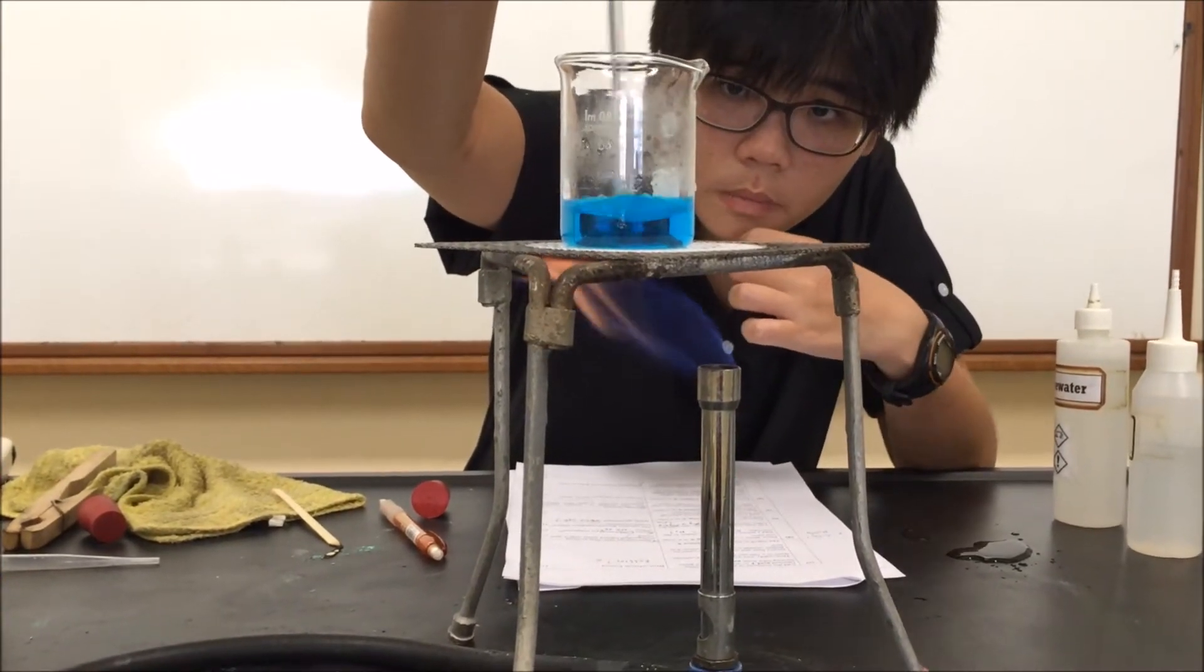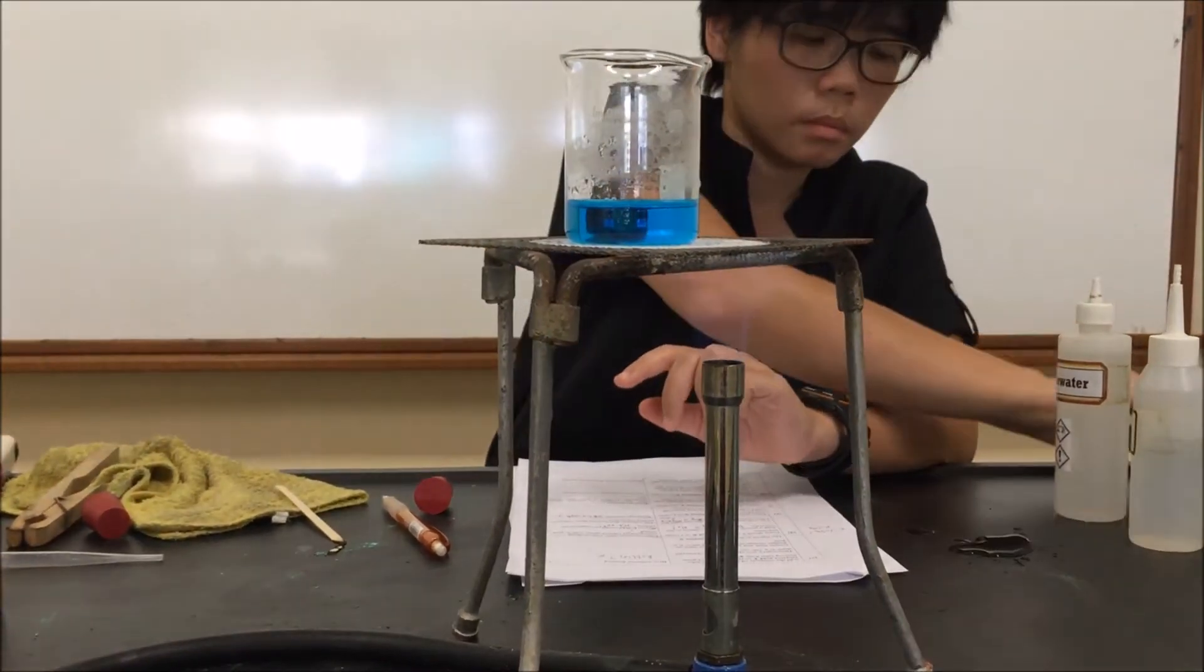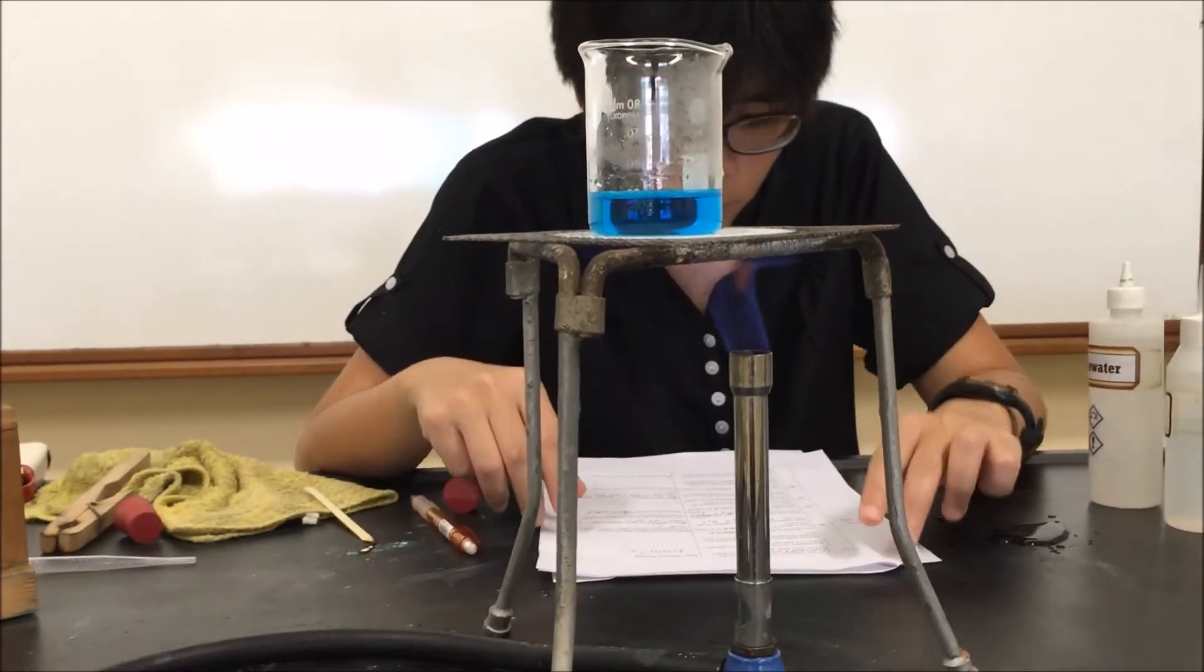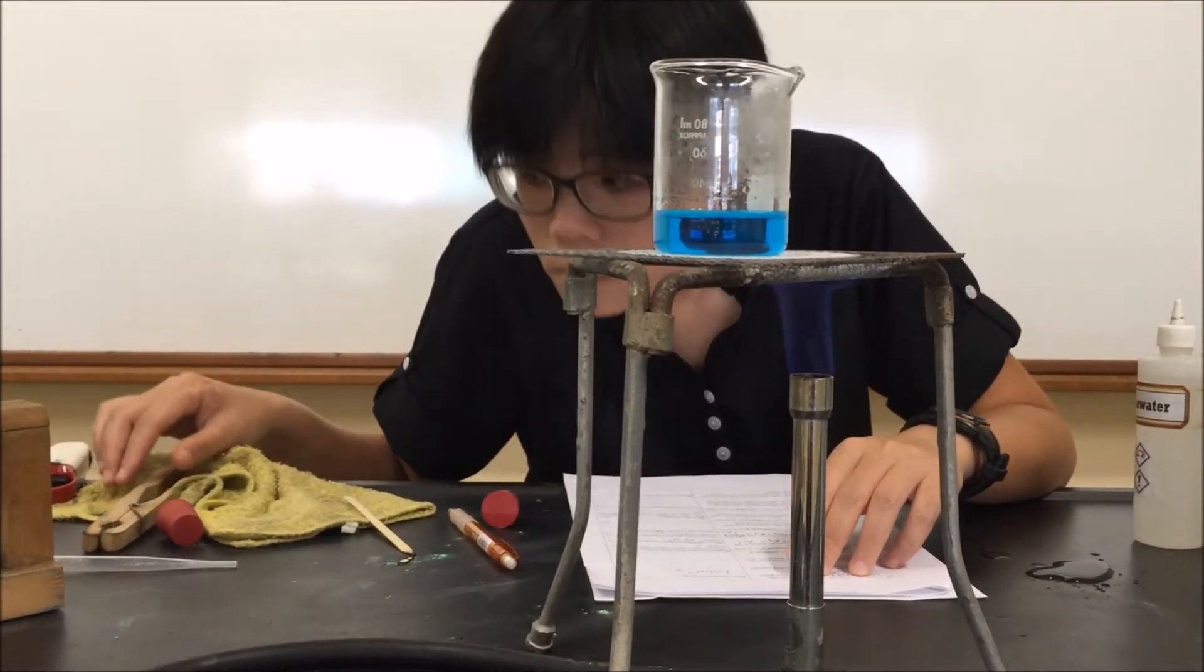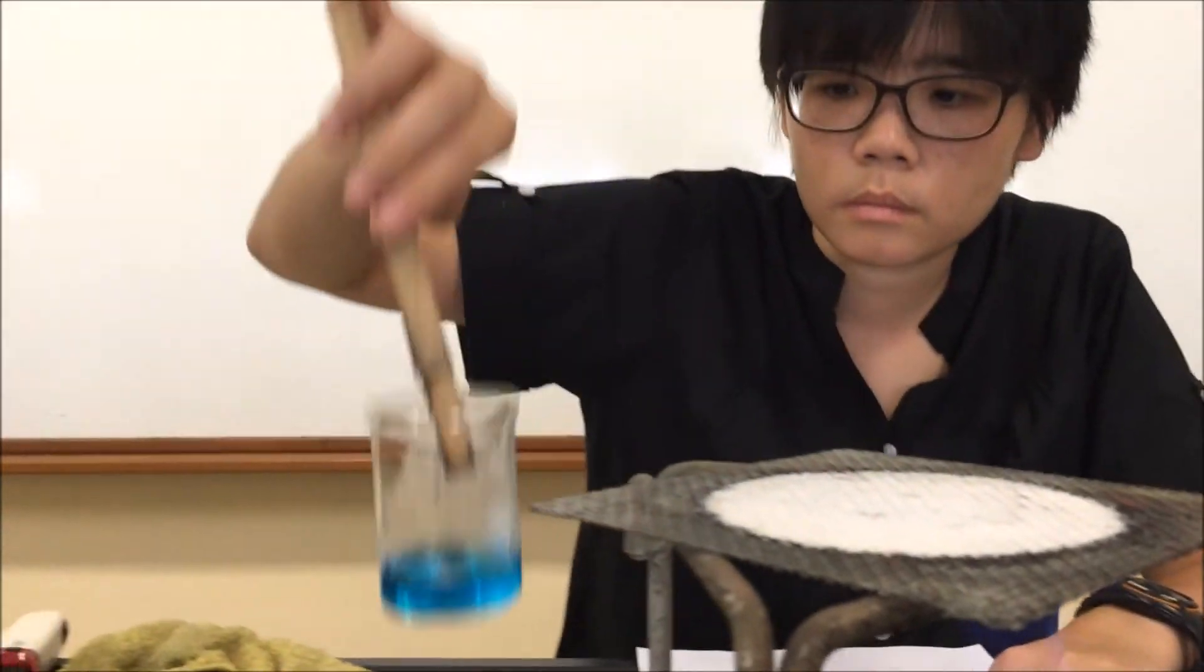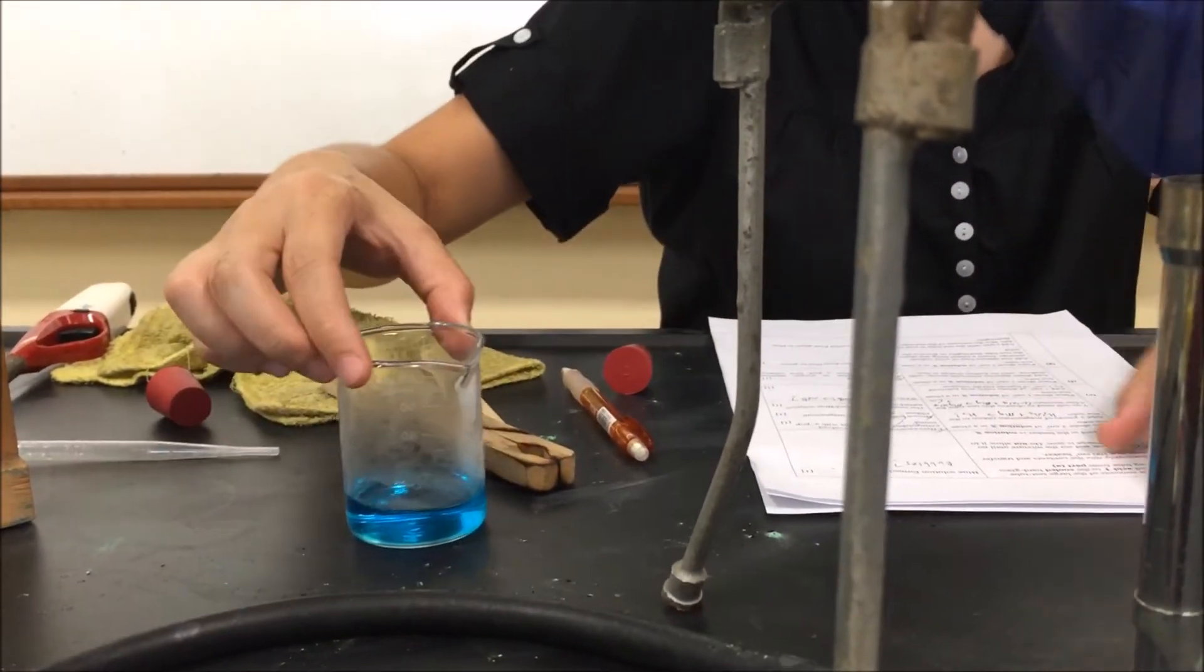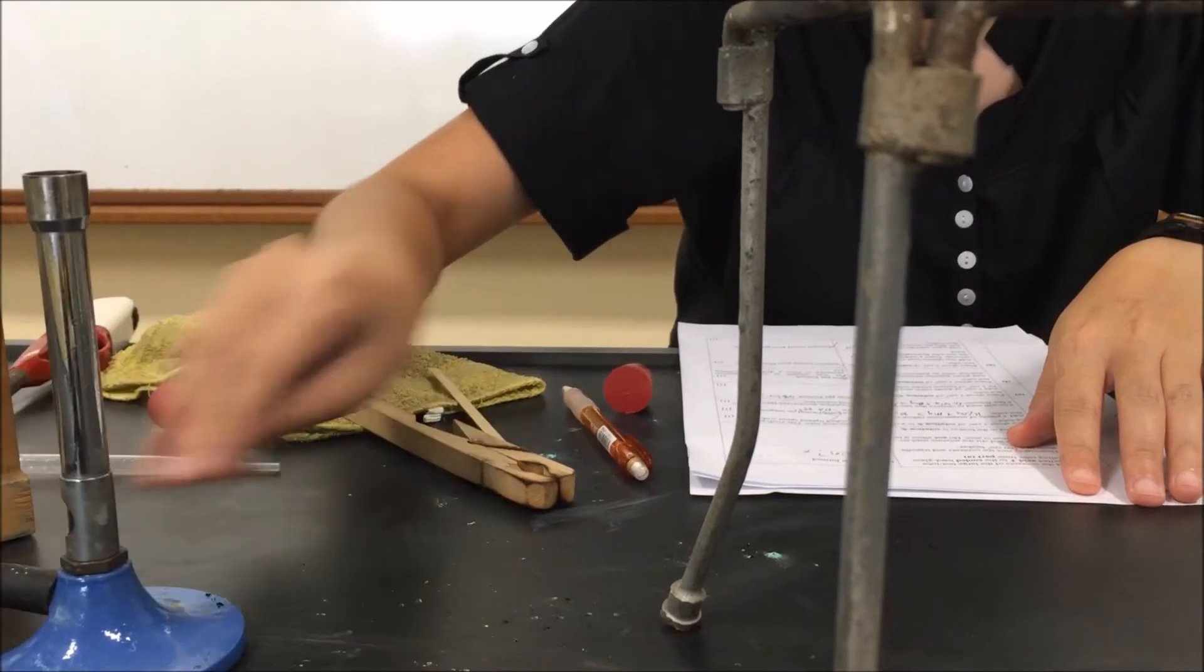We are now supposed to allow the liquid to boil. So we just heat it for a while. And then carefully remove it from the stand. And we will continue with the experiment. So the Bunsen burner and the retort stand, you could organize your bench, make sure that you have enough space so that you can carry out the experiments correctly and safely.